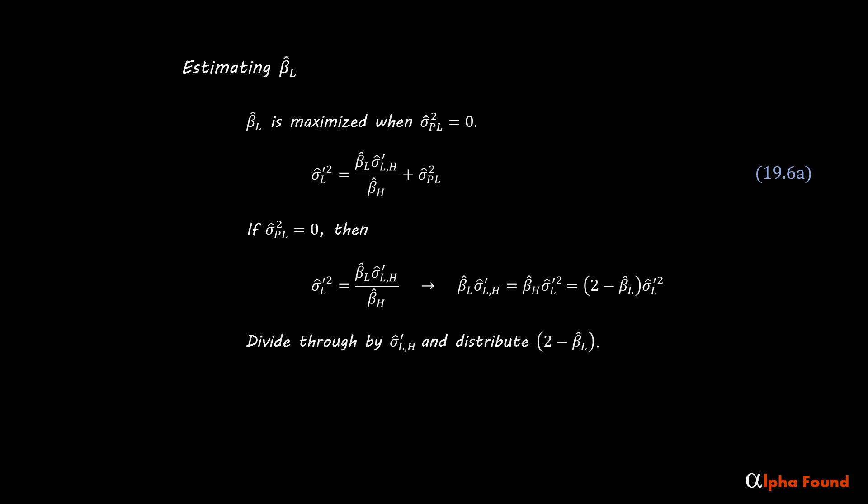Divide through by the covariance of the low and high cap M beta portfolios and distribute two minus the estimate for the low ideal beta.